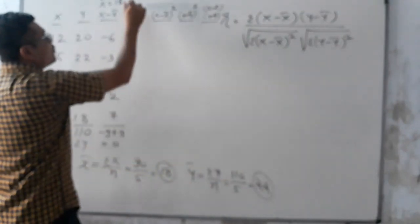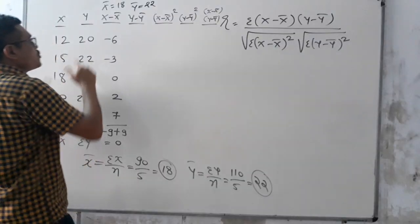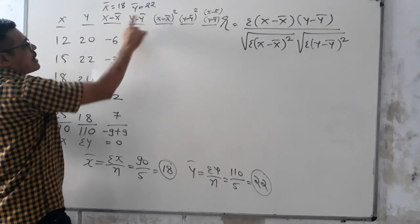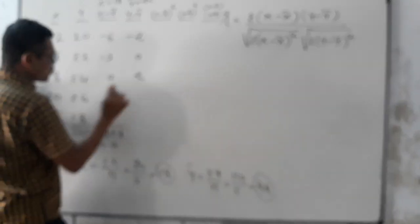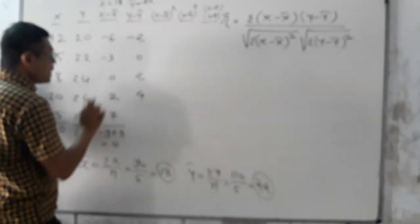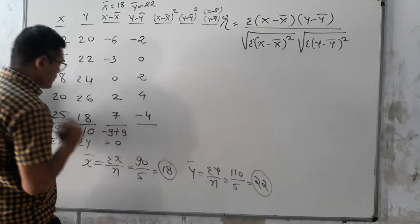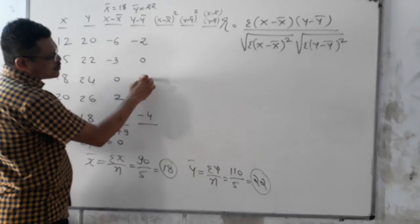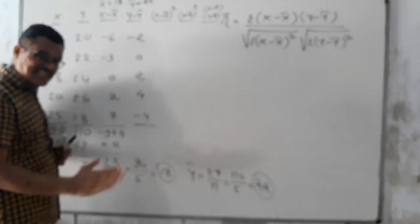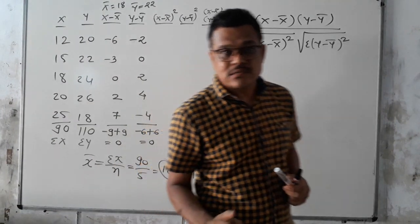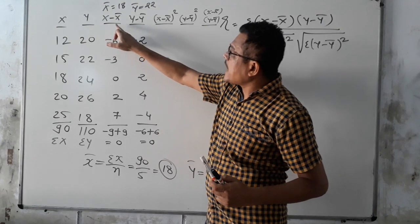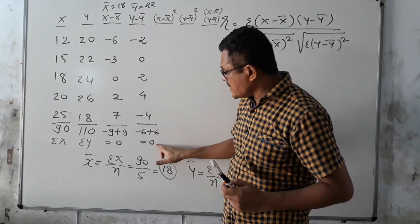Now, for column 2, Y − Ȳ where Ȳ = 22: 20 − 22 = −2; 22 − 22 = 0; 24 − 22 = 2; 26 − 22 = 4; 18 − 22 = −4. Total: 4 + 2 − 2 − 4 = −6 + 6 = 0. Just remember: the total of Σ(Y − Ȳ) is always 0. If you get 0 here, your answer is right.